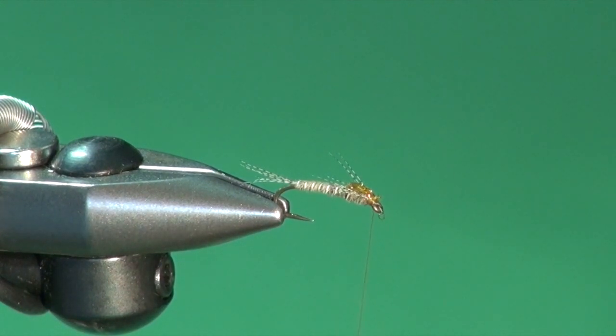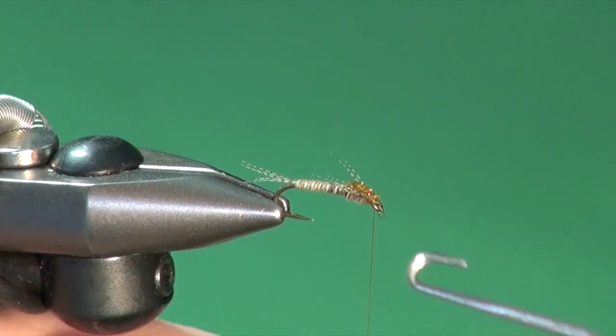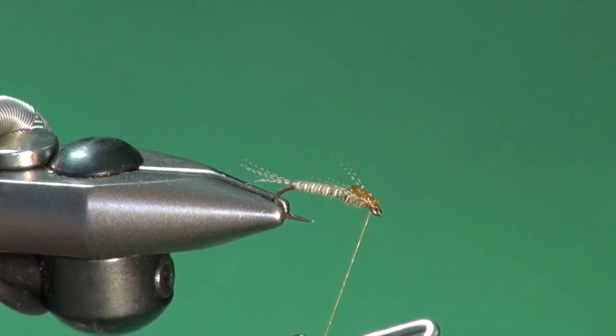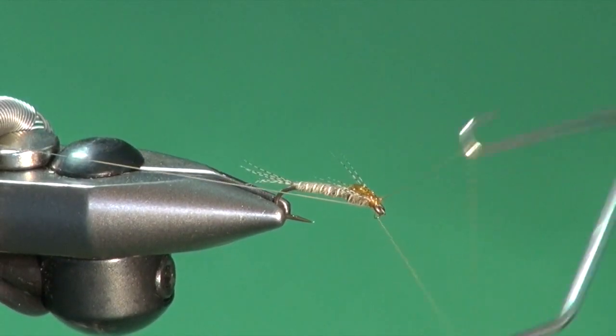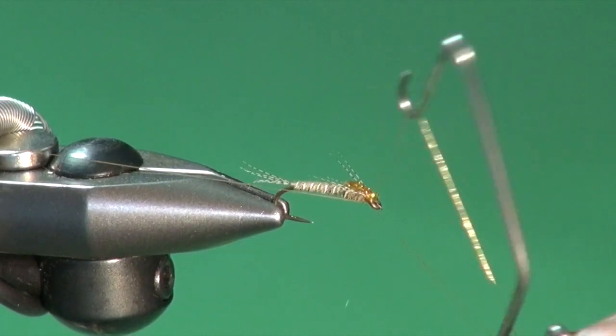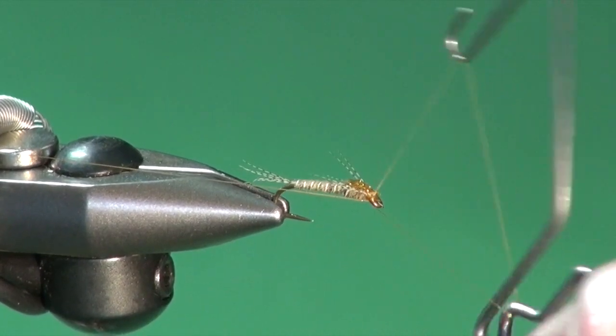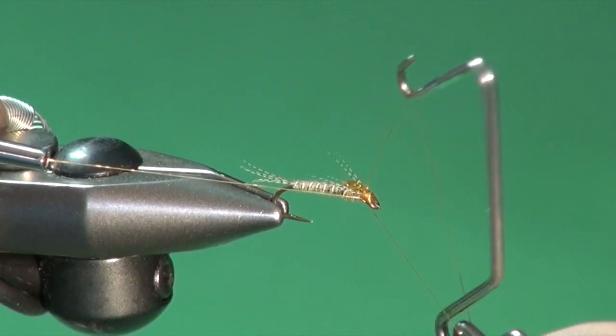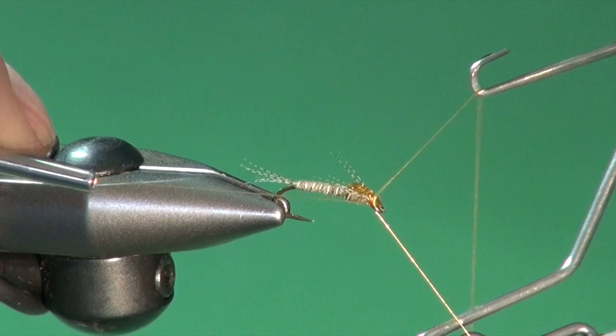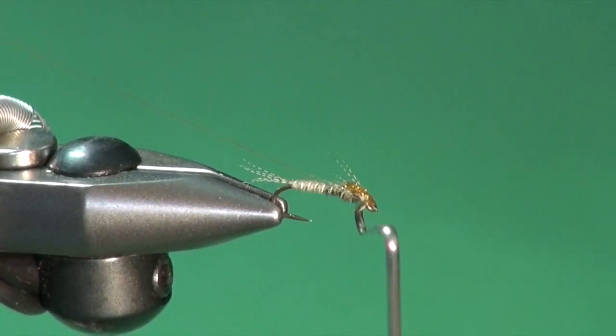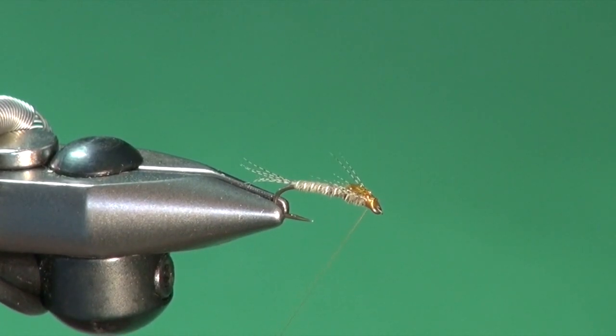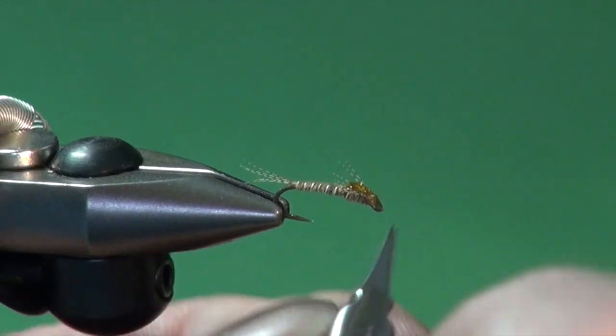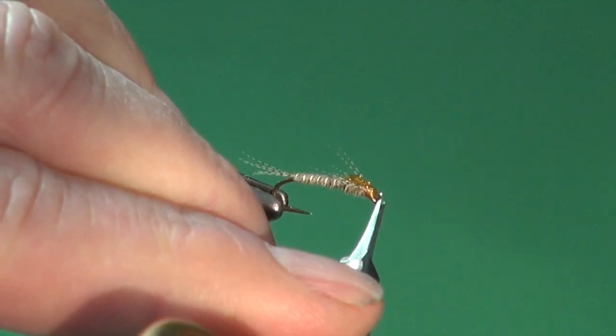We're going to take our tying thread, give it a gentle spin, and finish off our head using our whip finisher. Snip off. Clean up around the eye a little bit.